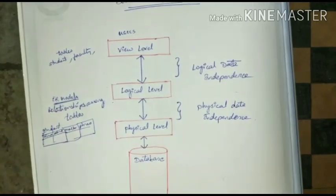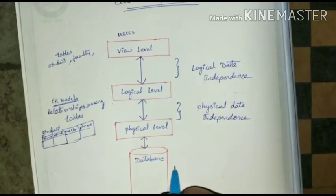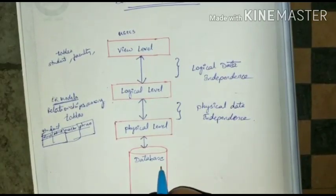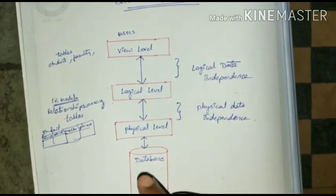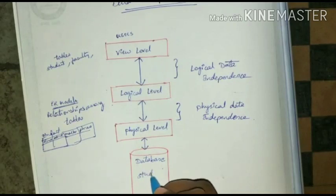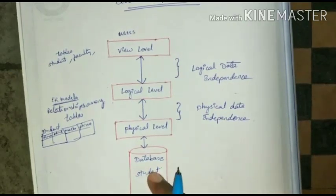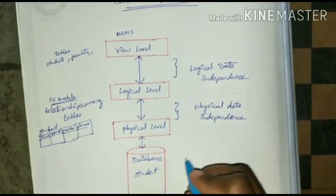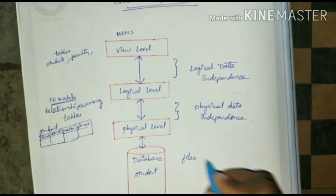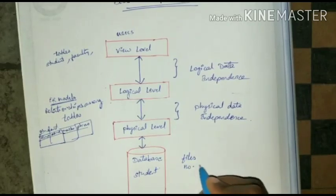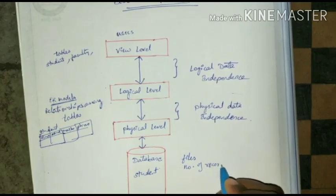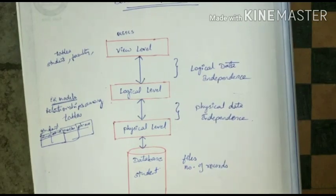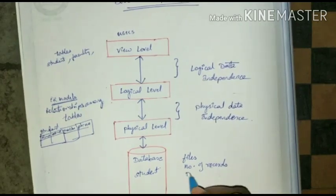Now coming to physical data independence. The physical level deals with the actual physical storage of the data in the database. For example, the student database stores student data — the number of records stored per file, what data structure is being used — all of this is at the physical level.